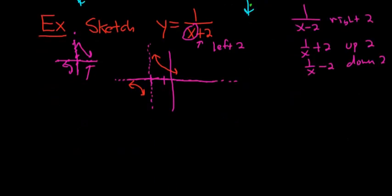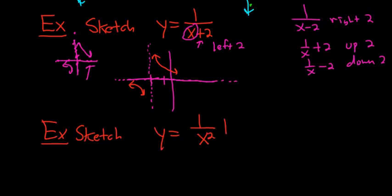Example: sketch y equals 1 over x squared plus 3. This time we're using the volcano function - we know that because the x is being squared. When you add 3 to the entire function, you're going to go up 3.